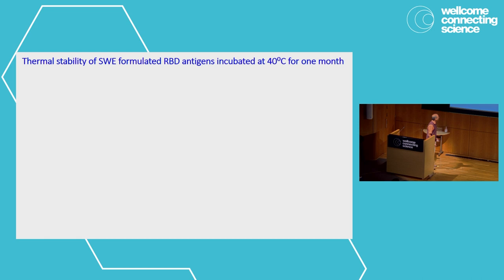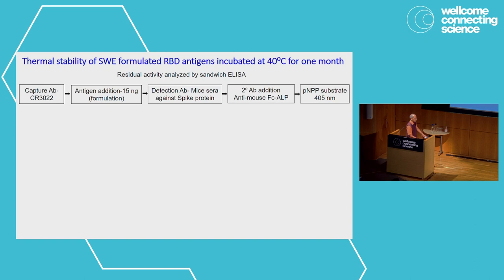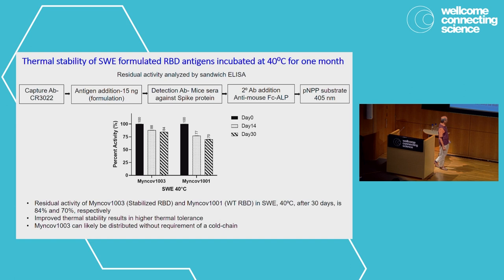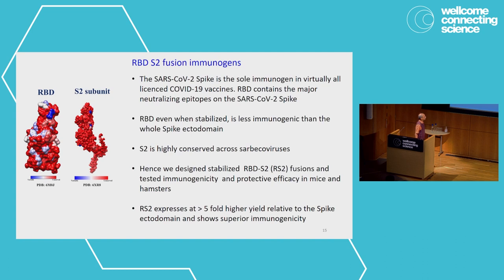We could also look in liquid formulations, since manufacturers typically don't prefer lyophilized formulations. We looked at liquid adjuvanted formulations and were able to show that the potency of the stabilized protein formulation was better than that of the wild-type protein formulation. Improved stability results in higher thermal tolerance, and these formulations can likely be distributed without the requirement of a last-mile cold chain, which is a very important criterion for distribution in many parts of the world.